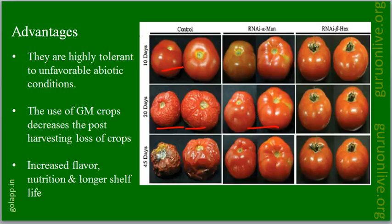Even after 45 days, the GM modified tomato is in good condition, whereas a normal tomato without any modification after 45 days is not in an edible condition. So this is one advantage of GM crops.